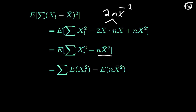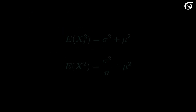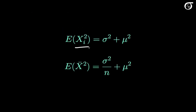Now let's carry the expectation through. Since the expectation of a sum is the sum of the expectations, we get the sum of the expectation of x sub i squared, minus the expectation of n times x bar squared. Since n is a constant we can take it outside the expectation. For these we go back to the earlier relationships: the expectation of x squared equals sigma squared plus mu squared, and the expectation of x bar squared equals sigma squared over n plus mu squared.